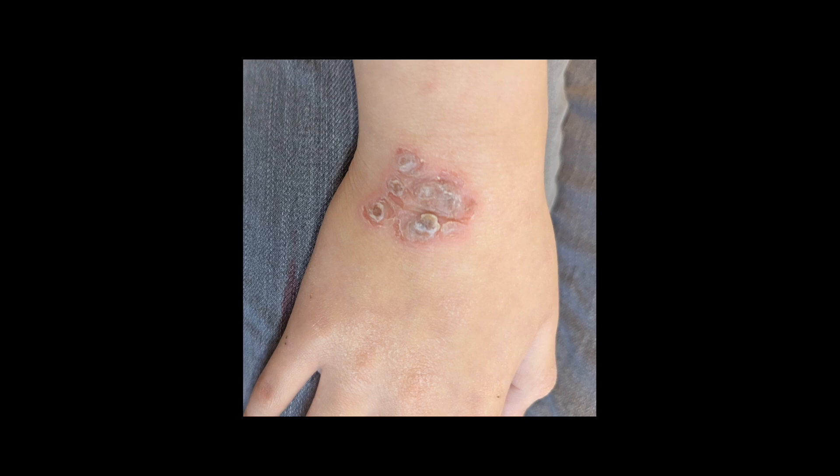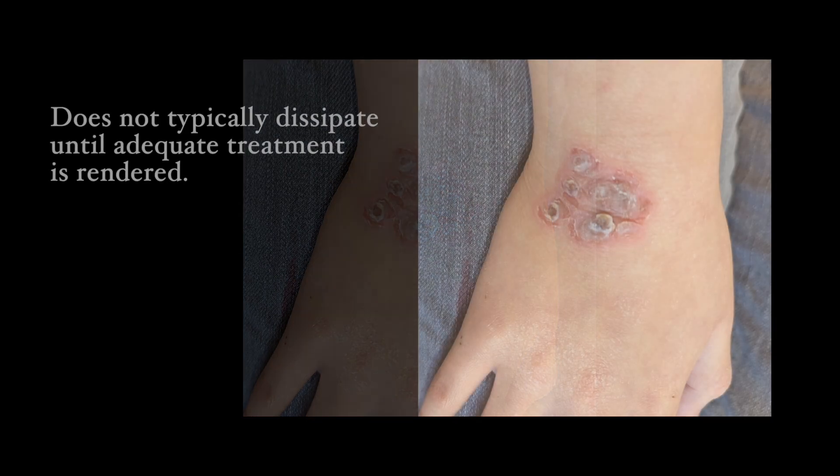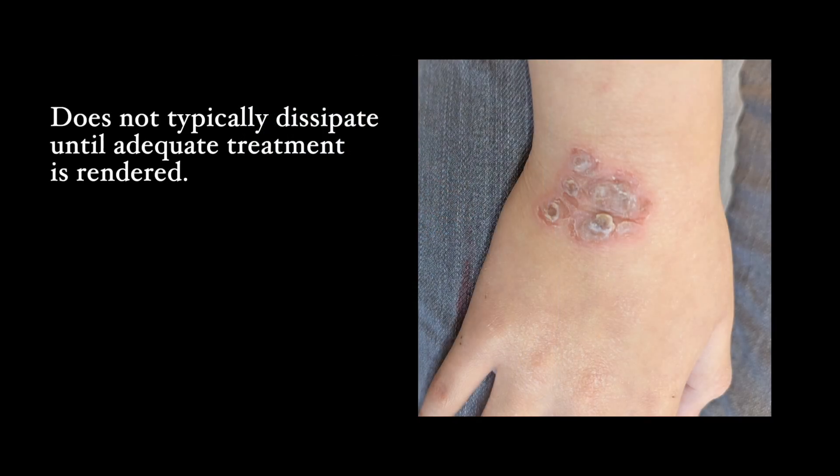If you look closely, this rash is crusted — just like the crust of a pizza — but it did not start like this. It began as thin-walled blisters that then thickened up. It can be very tormenting and stubborn, and it doesn't usually go away until adequate treatment is rendered.